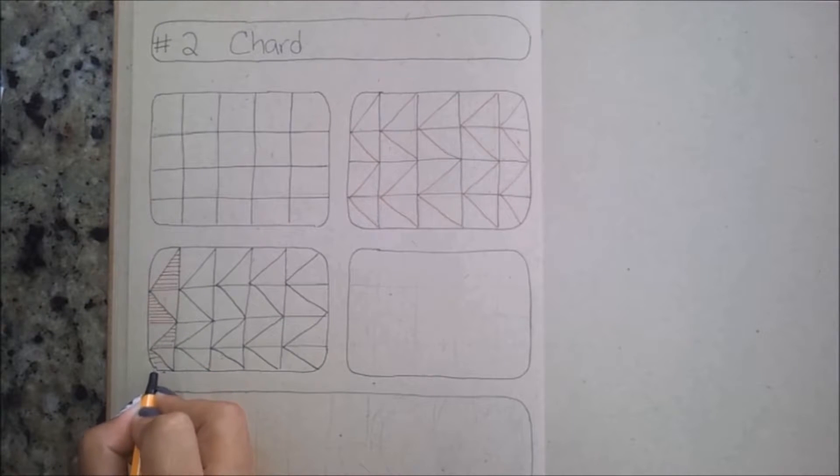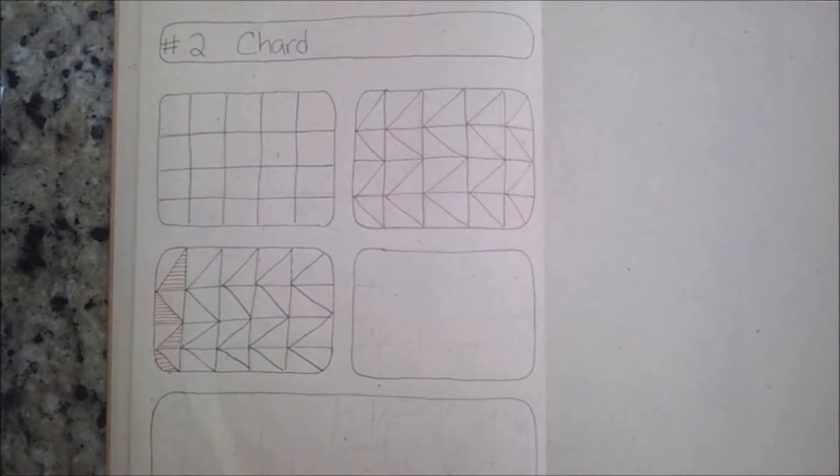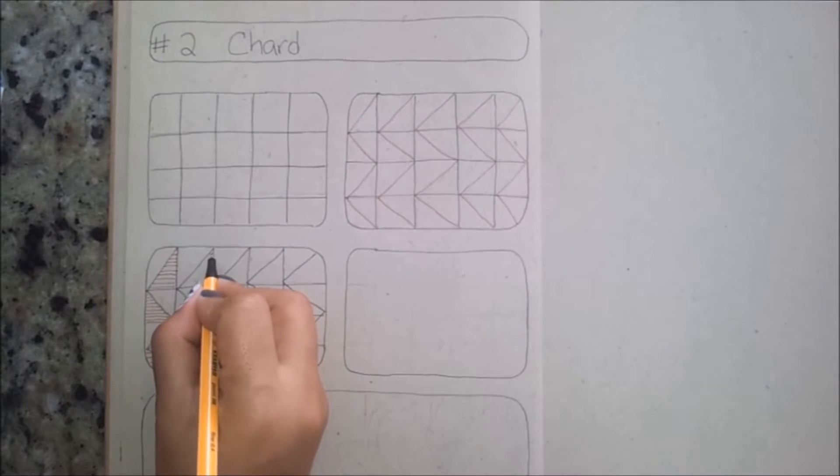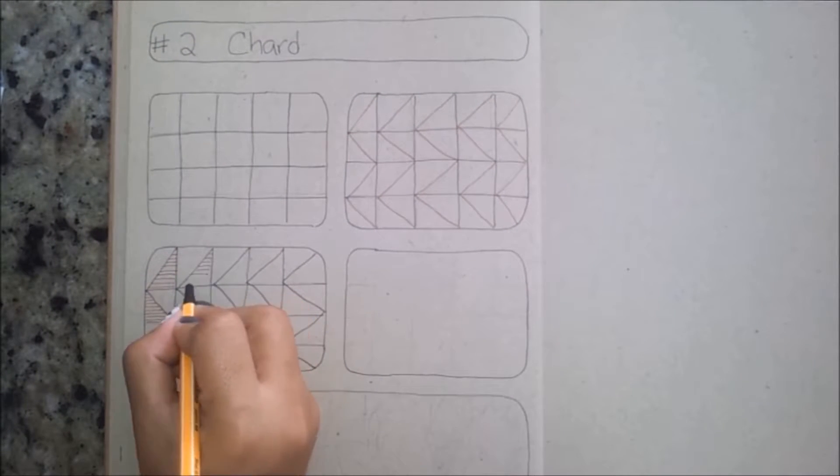In some squares the lower part is gonna be on the right, in others it's gonna be on the left.